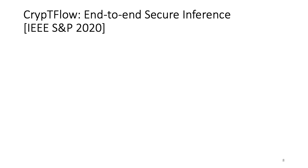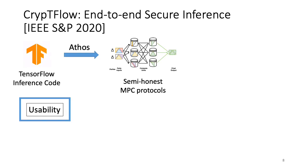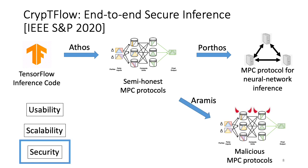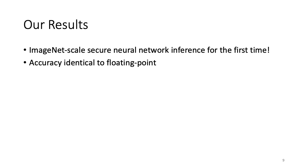This is exactly what we achieve in this work with CryptFlow, which appears at IEEE S&P 2020. CryptFlow has three components, each of which address one of the three aspects mentioned earlier. For usability, CryptFlow provides Athos, which is a compiler from TensorFlow inference code to semi-honest secure MPC protocols. To allow for scalability, CryptFlow has Porthos, a three-party semi-honest secure MPC protocol geared towards neural network inference tasks. And for security, it has Aramis, which is a general technique to convert any semi-honest secure MPC protocol to a malicious secure protocol by placing minimal assumption of integrity on entrusted hardware. With these three components in place, we are able to achieve ImageNet-scale secure neural network inference for the first time without loss in inference accuracy compared to floating point.